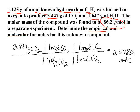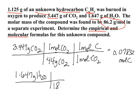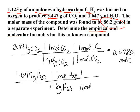We now use the mass of water to get the moles of hydrogen. We take our 1.647 grams of water: 18 grams of water is one mole of water, and one mole of water contains 2 moles of hydrogen. Punching this into our calculator gives us 0.1828 moles of hydrogen.